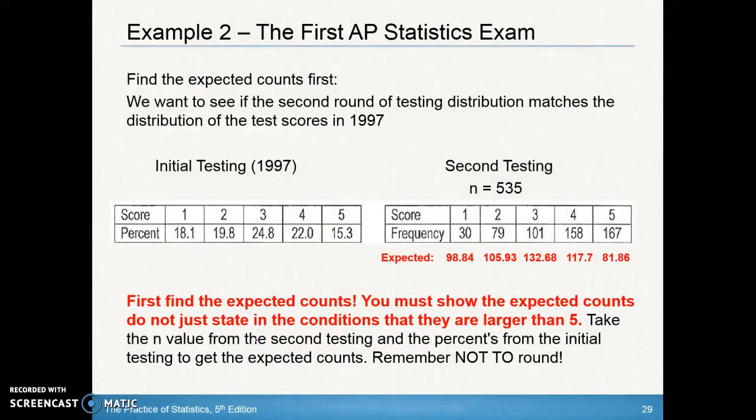The first thing that you're always going to want to do before you even start working through the question is to find the expected counts. Because remember, your chi-square goodness of fit test is to see, hey, does my observed counts fit my expected counts? So what we did in order to find the expected counts is number one, you had a total of 535. So at the end of your table, always find the total number of students that you have.